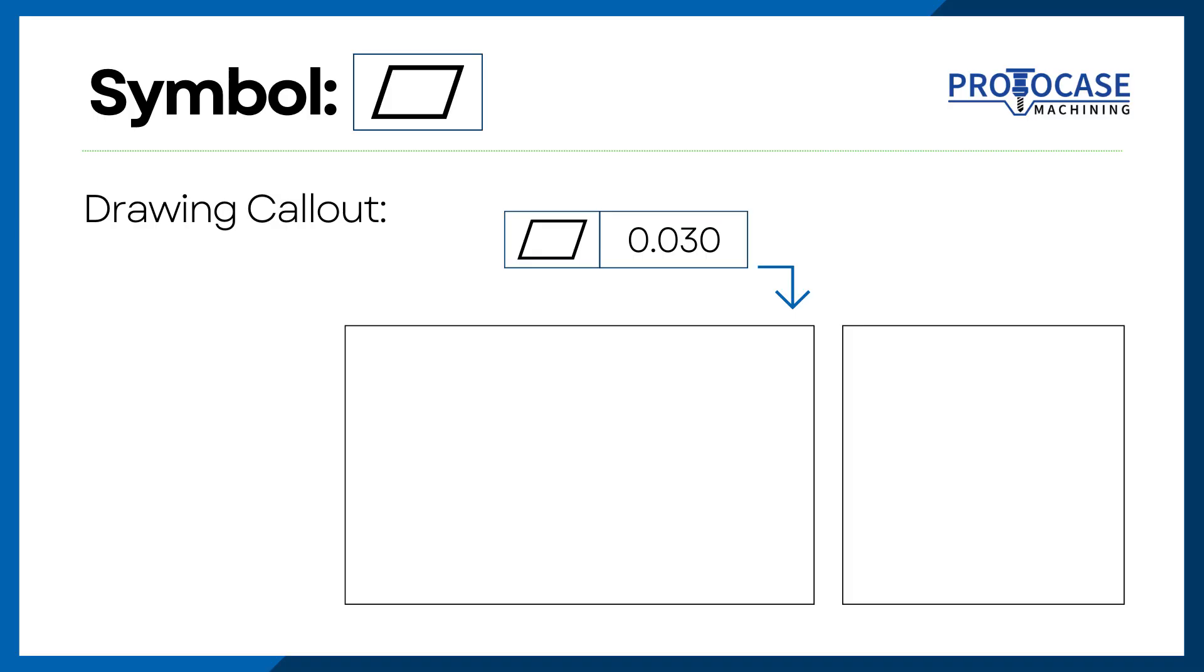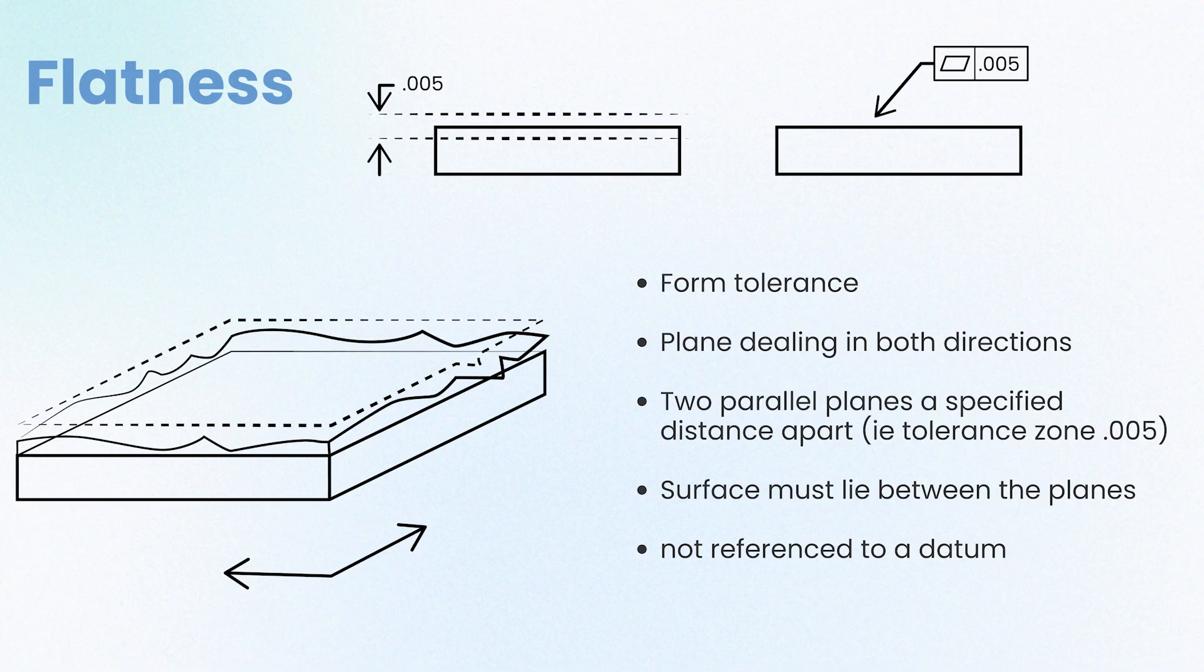You'll often see flatness denoted as a symbol of geometric dimensioning and tolerance, also known as GD&T. In this case, flatness indicates a range of a tolerance zone of two parallel planes on either side of a surface. One important distinction, a material's flatness does not represent a thickness tolerance.